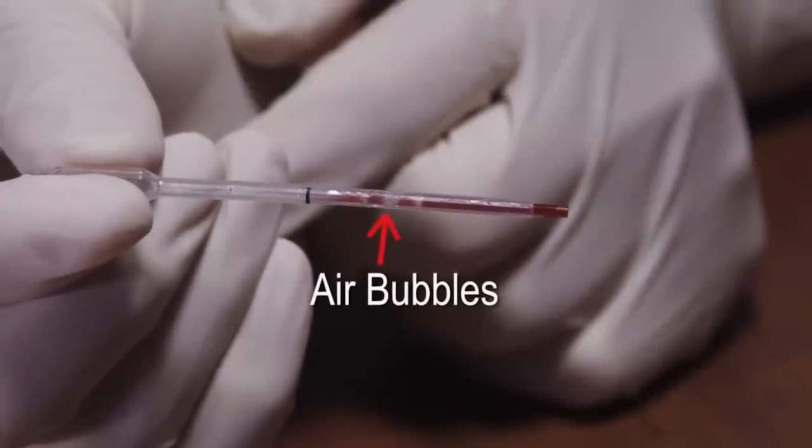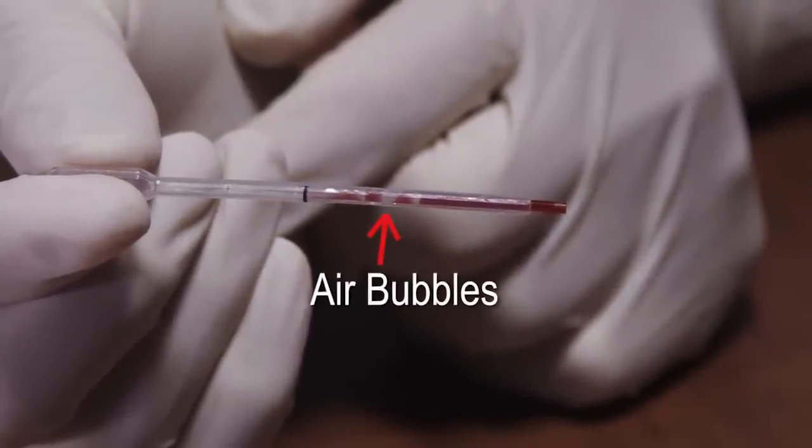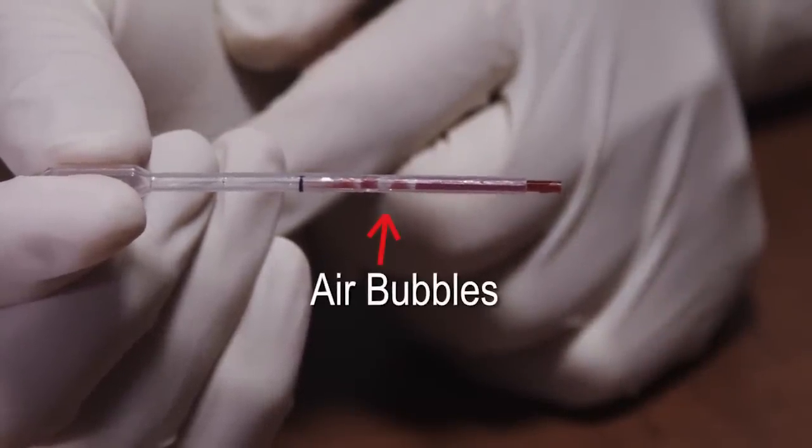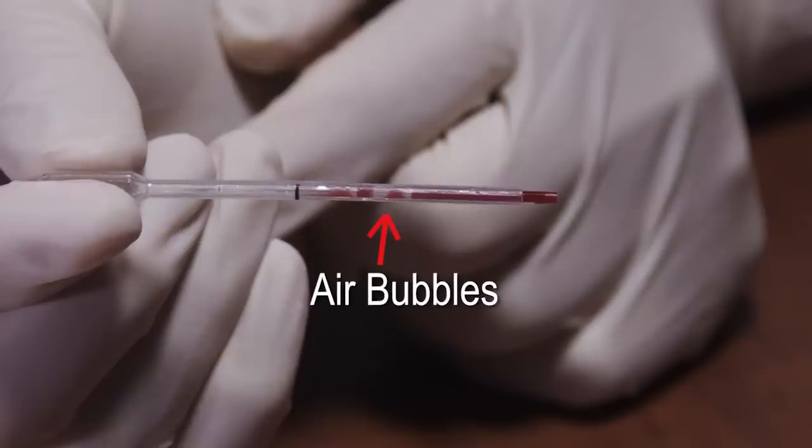If an air bubble is seen inside the transfer tube, perform another finger stick and repeat the previous steps. Do not attempt to aspirate the sample by squeezing the bulb.